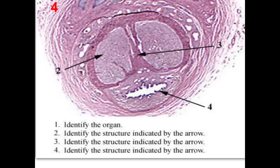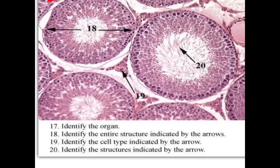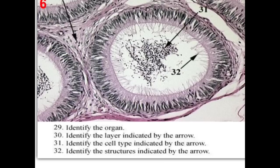Review: Identify the organ — penis. Identify the structure indicated by the arrow — corpus cavernosum. Identify the medial septum — formed of connective tissue separating the two corpora cavernosa. Identify the penile urethra — lined by stratified columnar epithelium changing to stratified squamous in its distal part, the fossa navicularis. Identify the organ — testis; the structure — seminiferous tubule; the cell type — interstitial cells of Leydig; and the structures — spermatozoa or sperms.